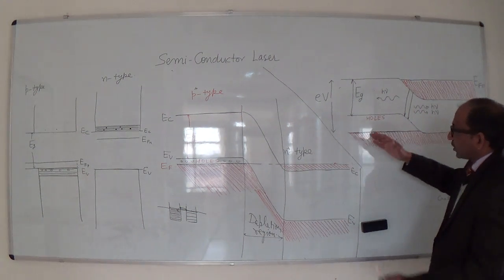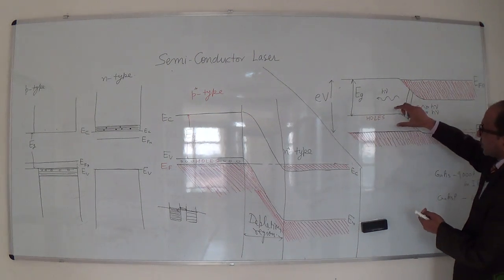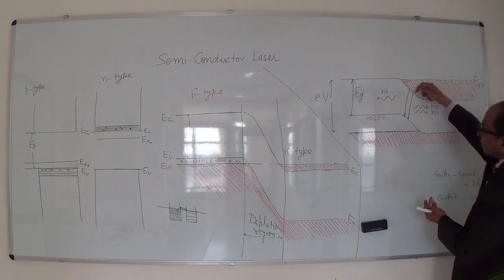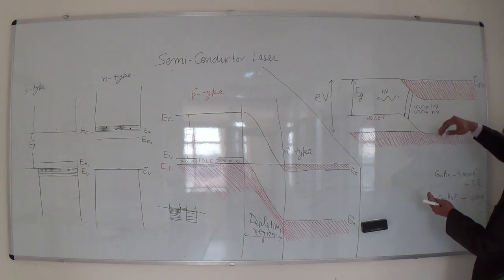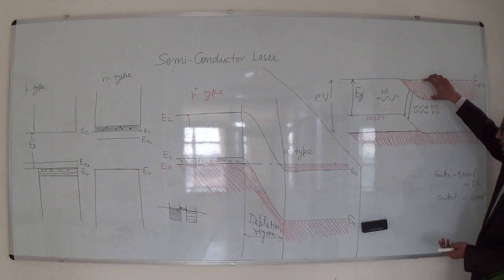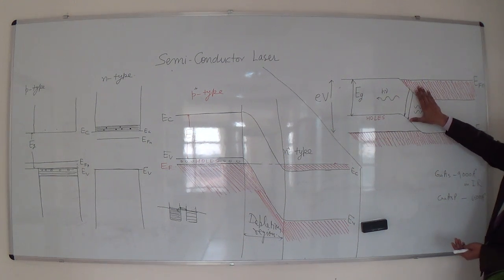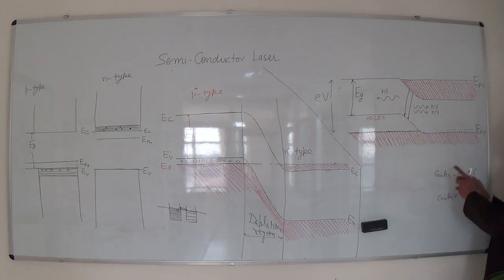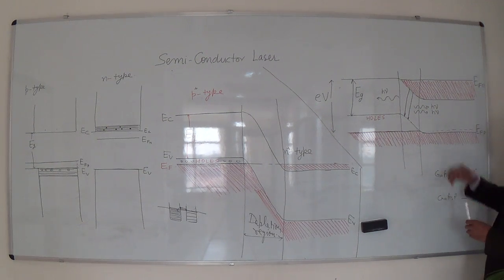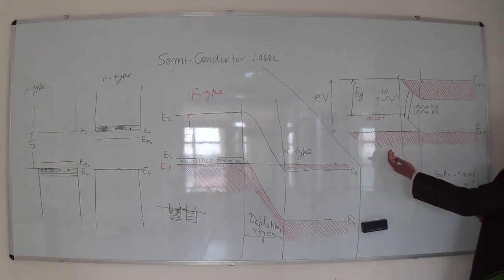When we increase the current, the barrier height becomes almost zero. As the current approaches a threshold value, we observe stimulated emission — and this is where population inversion occurs. In the semiconductor case, population inversion means a large number of electrons are in the conduction band and a large number of holes are in the valence band. In the depletion region, there are majority charge carriers in the conduction band and vacancies in the valence band of the P-type semiconductor.